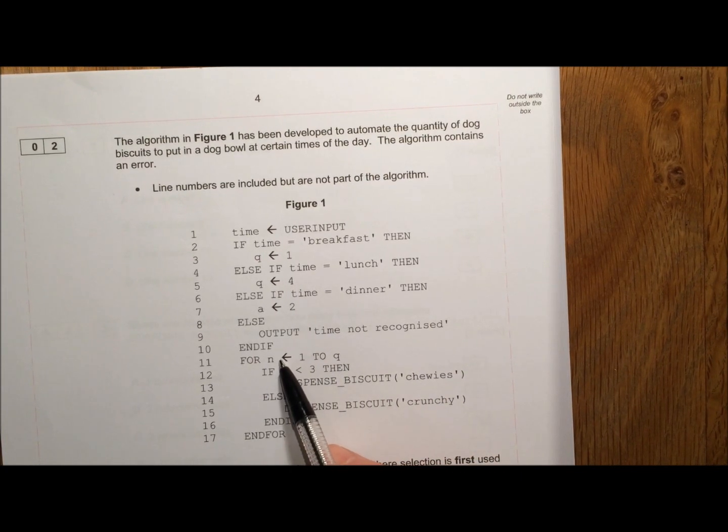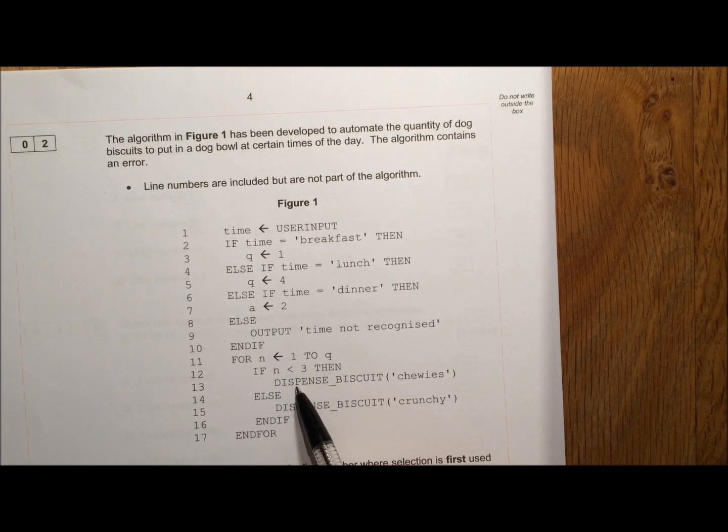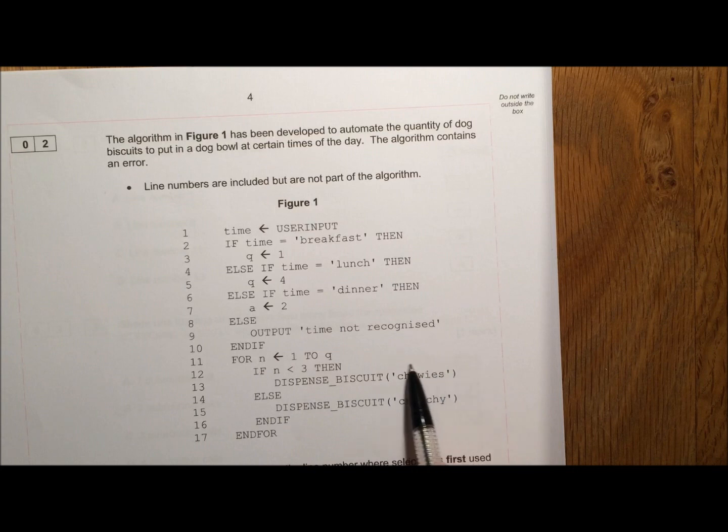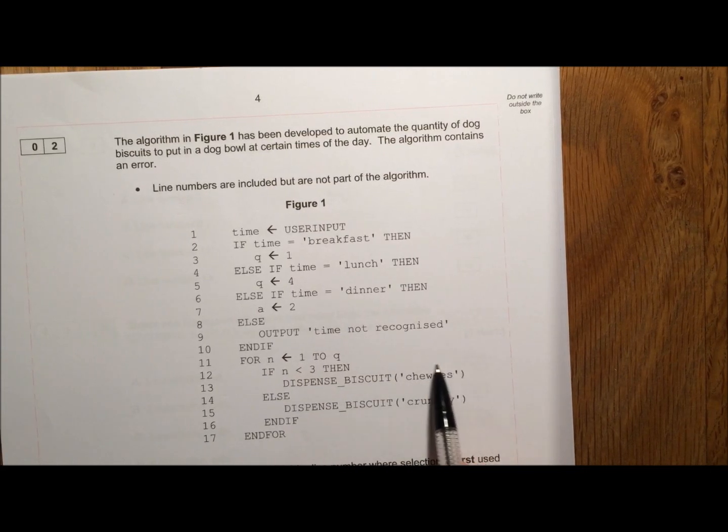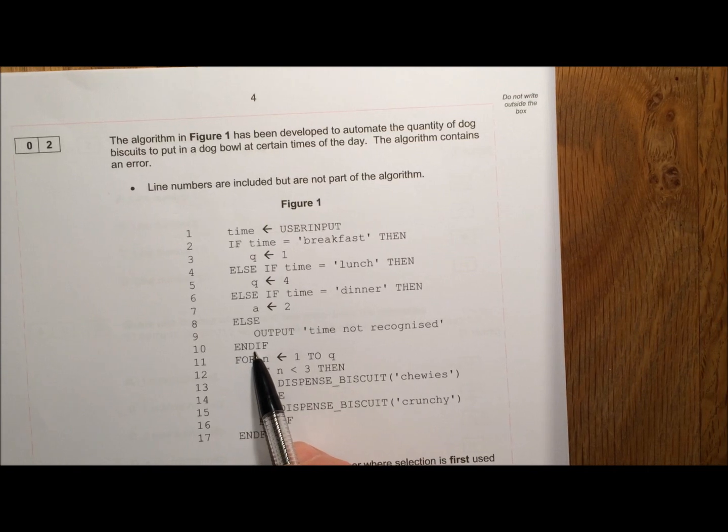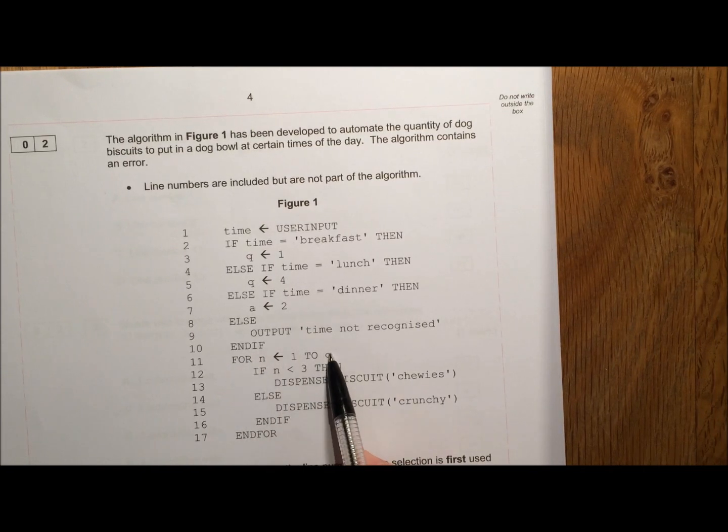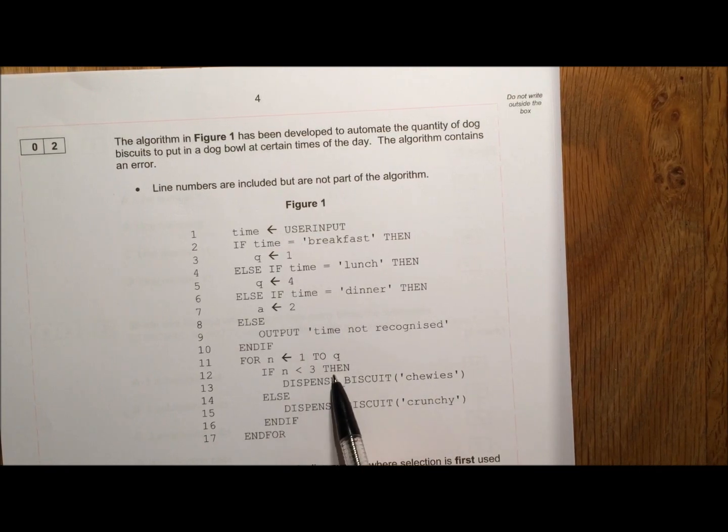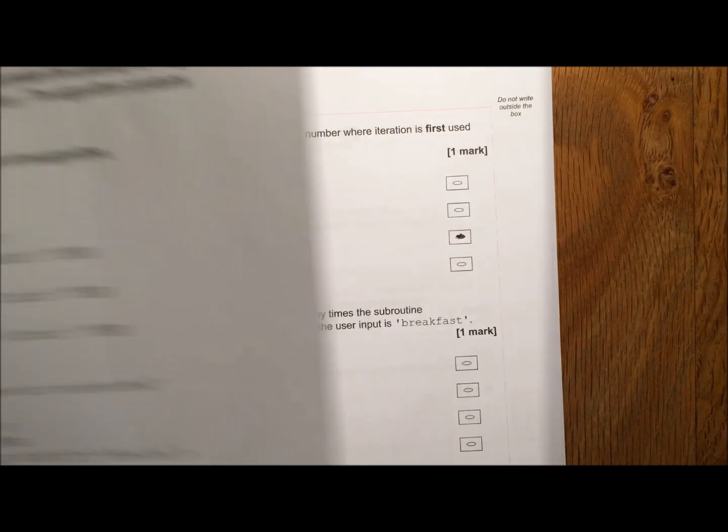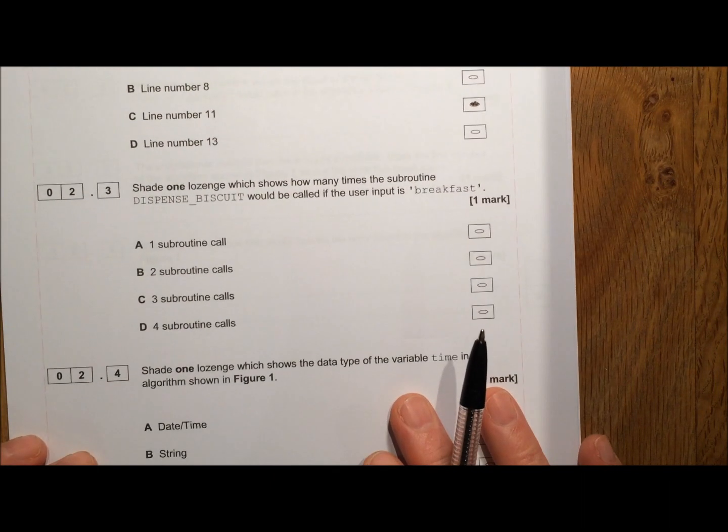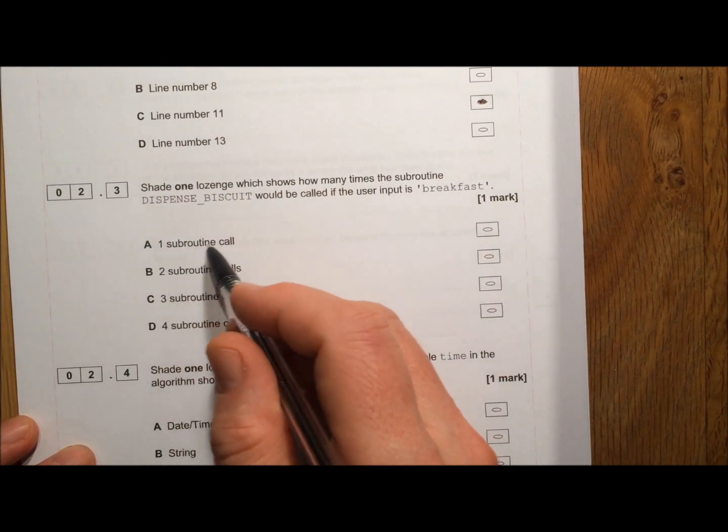So N is going to be 1 the first time through. Is N less than 3? Yes, it is. So we're going to call the subroutine dispense biscuits now. We go back. Does N get to 2? No. Because we said that Q, the highest value, is 1. We've only called the subroutine dispense biscuits once. So the answer is we need 1 subroutine call.